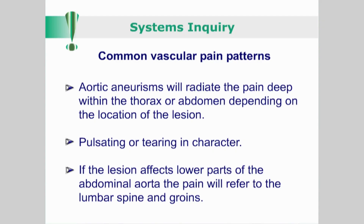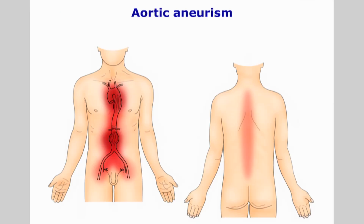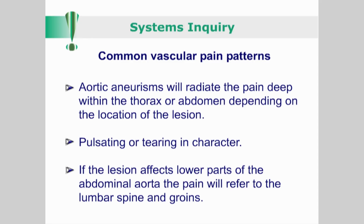Let us now consider some common vascular pain patterns. Aortic aneurysms will radiate the pain deep within the thorax or abdomen depending on the location of the lesion and to the adjacent parts of the spine. It is often described as pulsating or tearing. If the lesion involves the common iliac arteries or if it is near their bifurcation, in addition to lumbar pain, these symptoms may also radiate into the iliac fossi or groins.